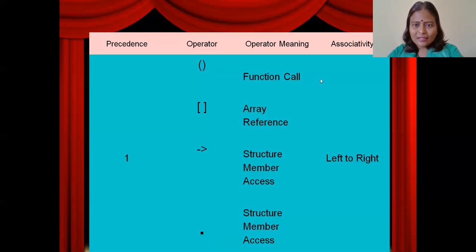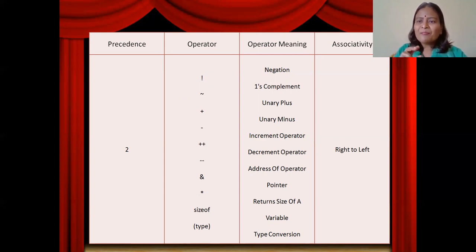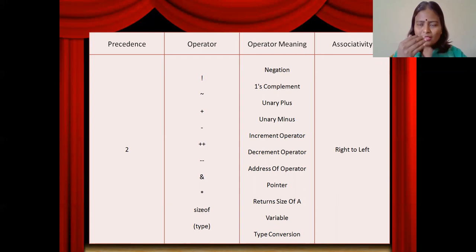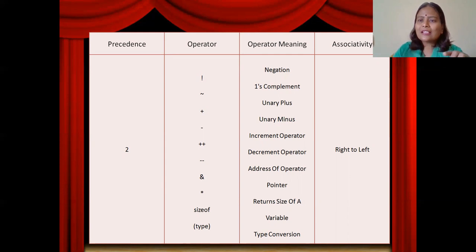The next second precedence goes to this set of operators: unary minus, logical not negation, tilde complement, unary plus, plus-plus (increment), minus-minus (decrement), bitwise AND symbol, star for pointer references, sizeof, and type cast operator. Note that post-increment has got more precedence than pre-increment — we will discuss that through examples. When any combination of these operators appear in the same expression, the order of evaluation is right to left.